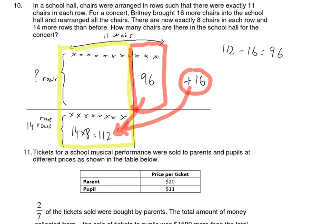There are 3 chairs per row, so I can find the number of rows at first. Sky, tell me the number of rows at first. 96 divided by 3 equals 32 rows at first. Since there are 32 rows at first and 14 new rows were added, there are 32 plus 14 equals 46 rows at the end.